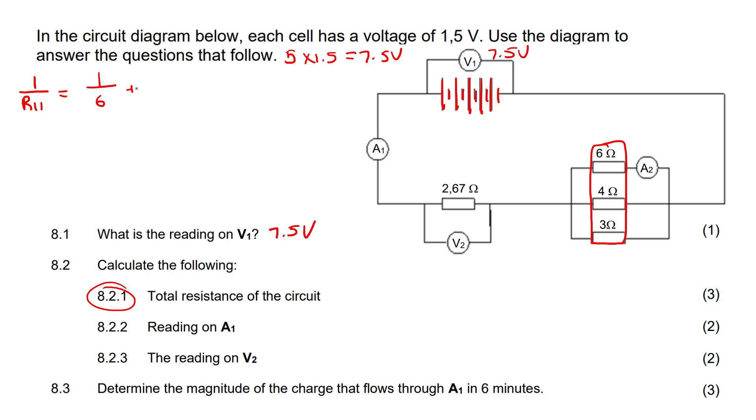So you say 1 over 6 plus 1 over 4 plus 1 over 3. If you type that all in, you end up with 3 over 4. Then you flip both sides upside down, so R parallel equals 4 over 3 ohms.